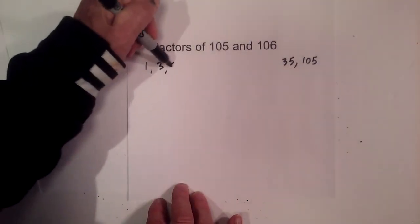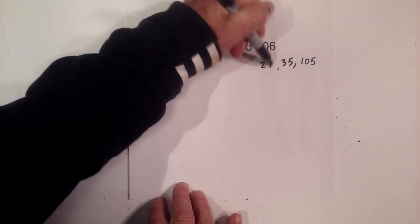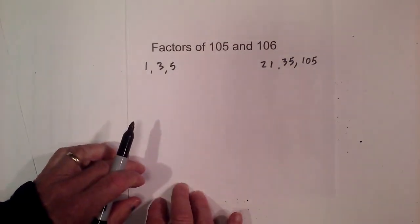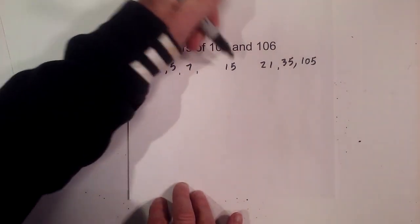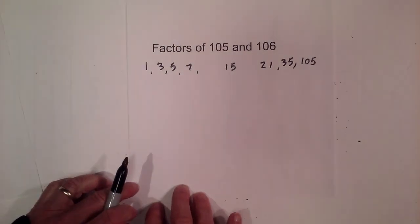And then 5 times 21 equals 105, and then 7 times 15 equals 105.